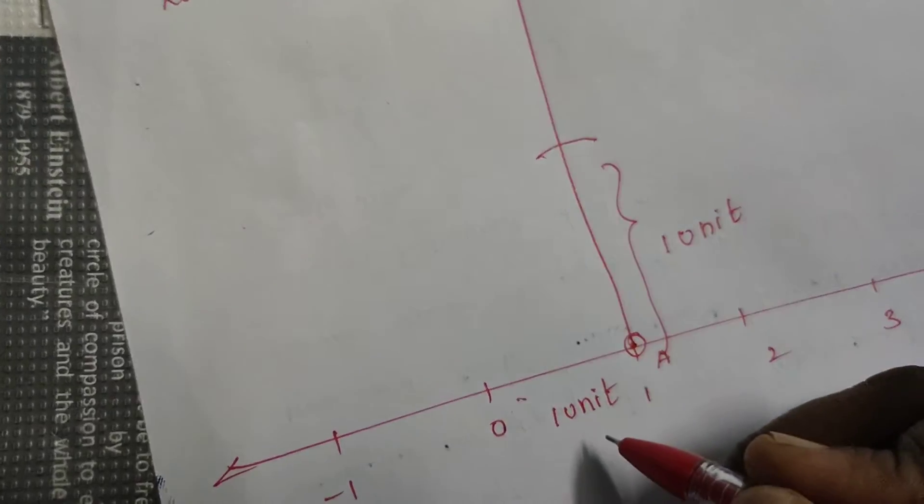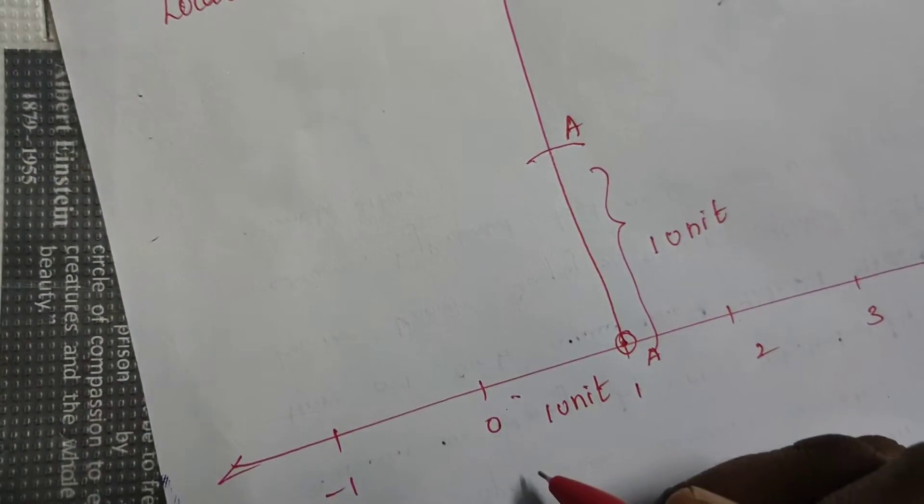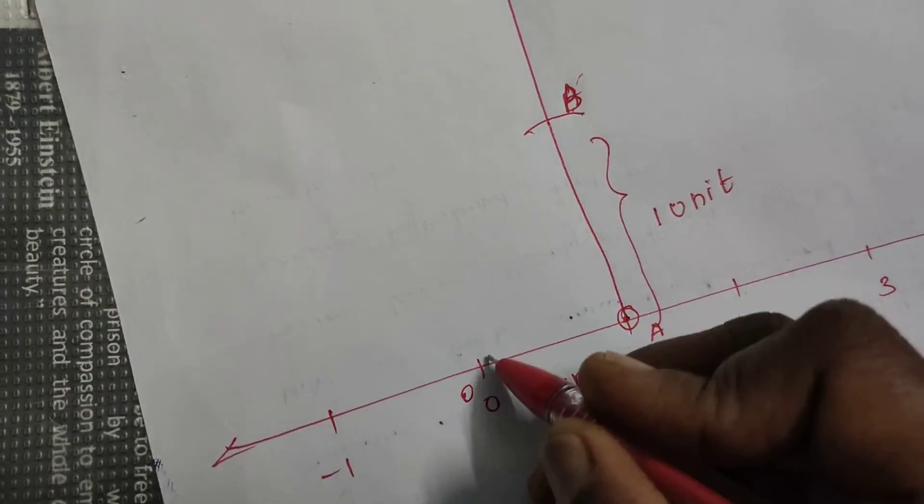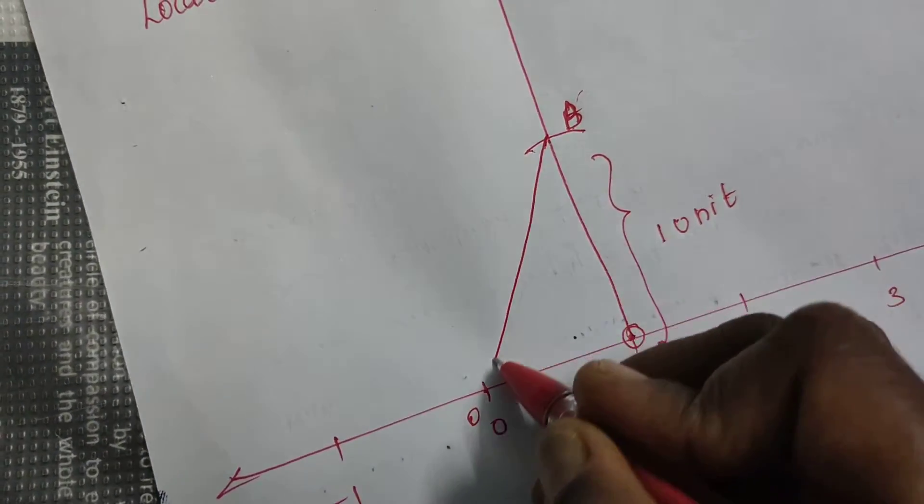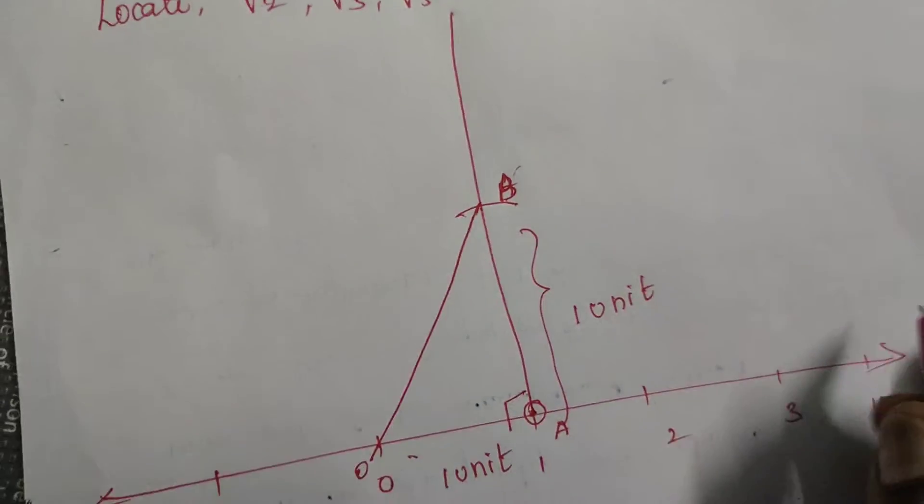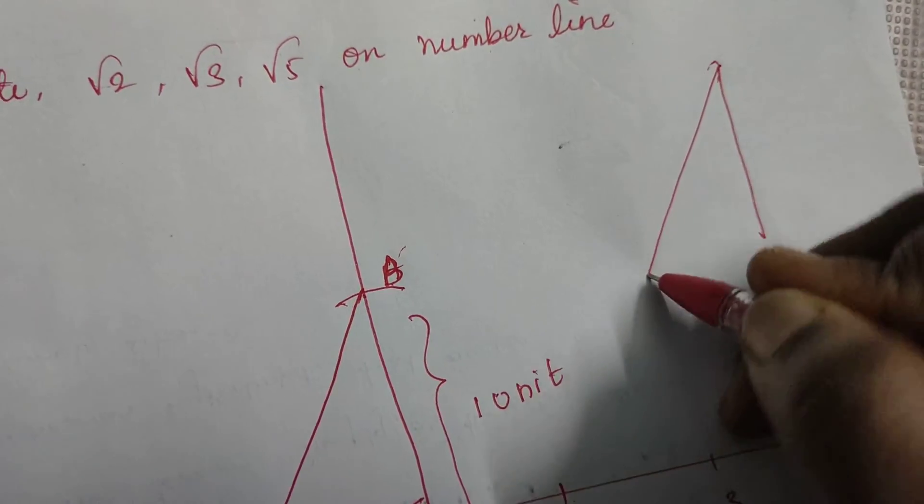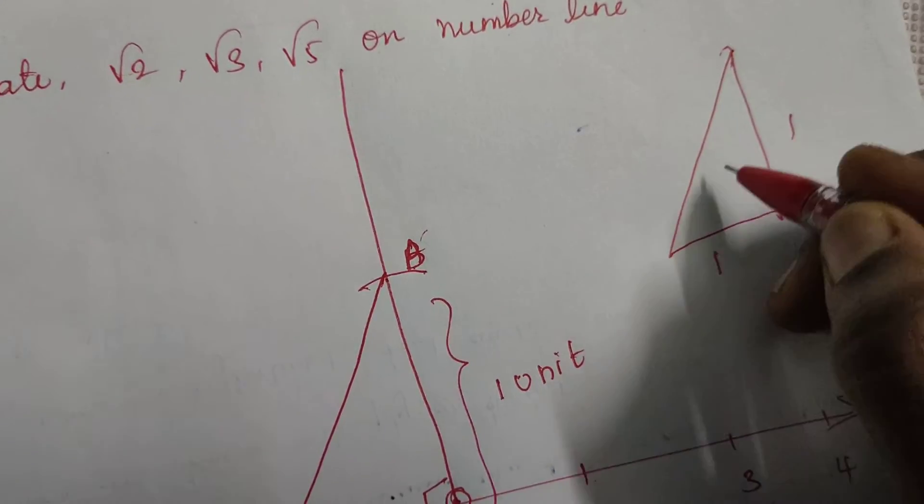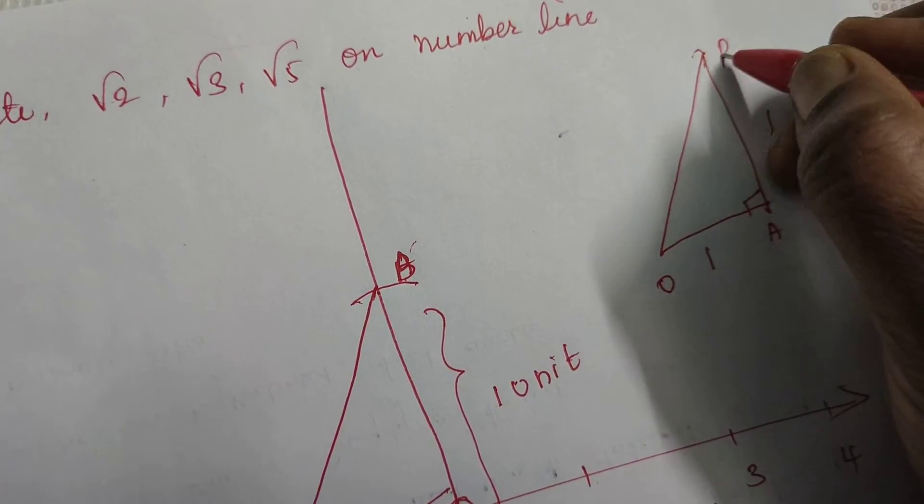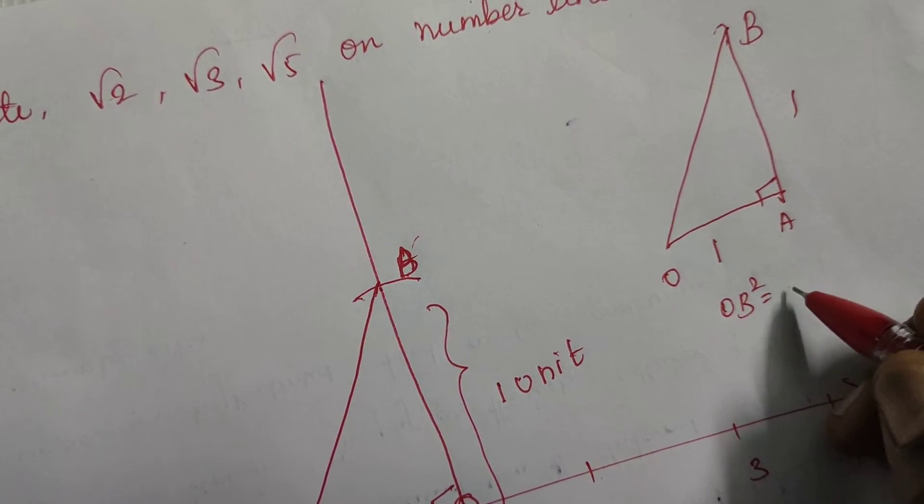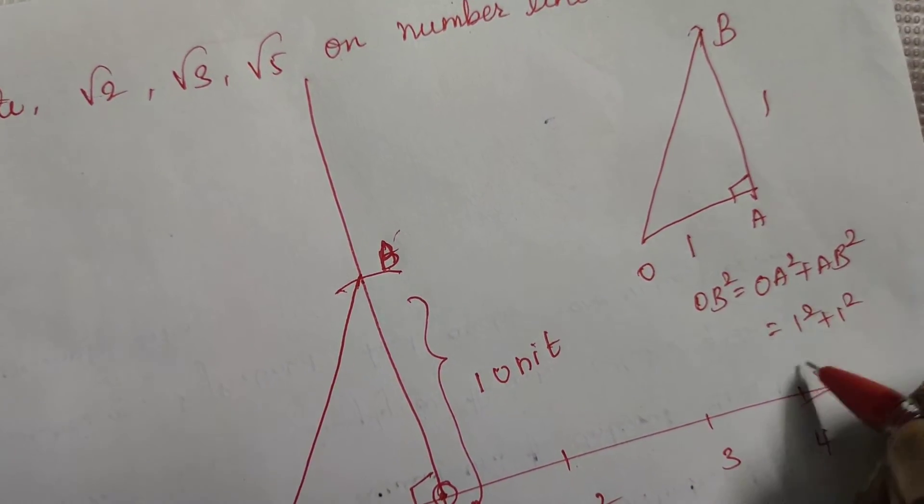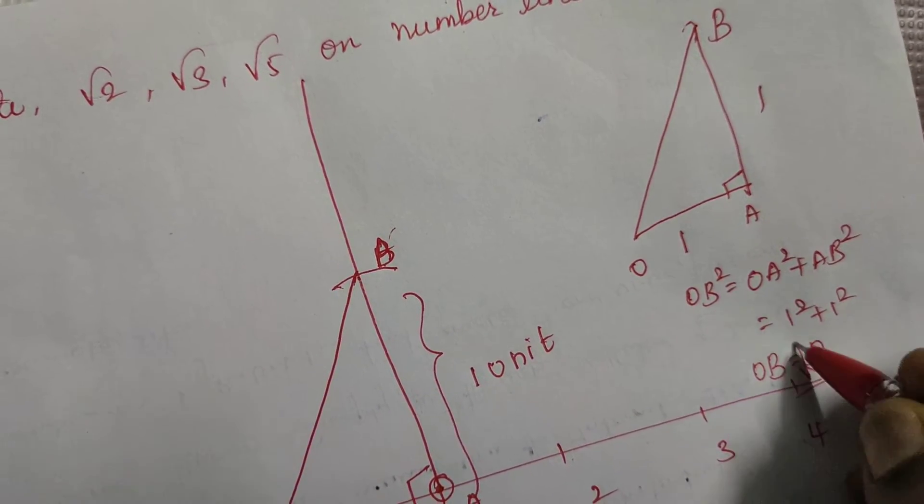Now, this is 1 unit as well as this is 1 unit. Now, let us join. Let us name this as B and join. Let this be O and let us join OB. This is a right angle triangle OAB. So according to Pythagoras theorem, when it is a right angle triangle, when these 2 are 1 unit, 1 unit each and you have a right angle over here, according to Pythagoras, he has told us OB square will be equal to OA square plus AB square, which is equal to 1 square plus 1 square which is equal to 2. So the length of OB is root 2.